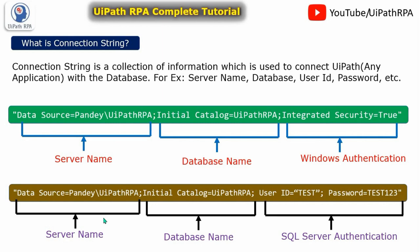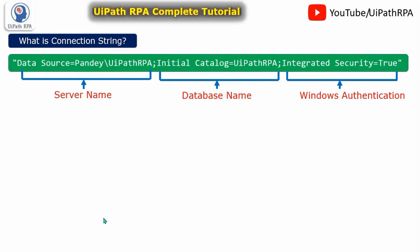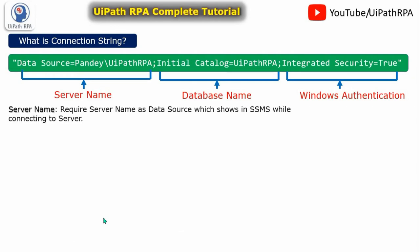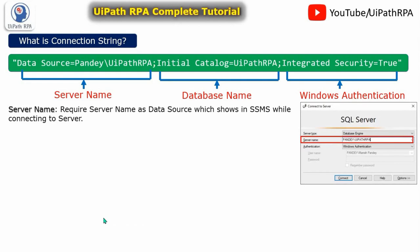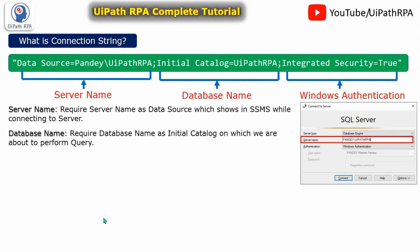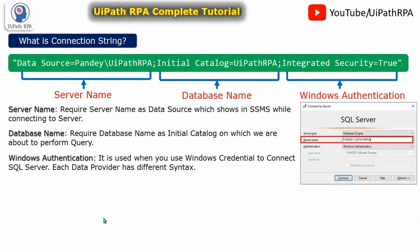That way your UiPath Studio can connect with the SQL Server. The server name is required as a data source, which shows in SSMS while connecting to the server. The database name is also required as initial catalog, because we are going to perform queries on that database. Windows Authentication is used when we use Windows credentials to connect to SQL Server. Each data provider has a different syntax.